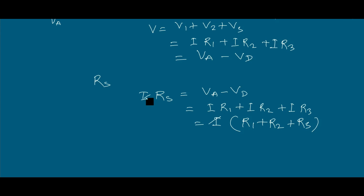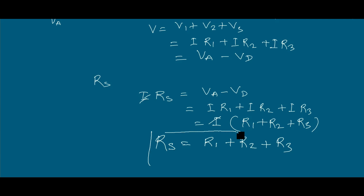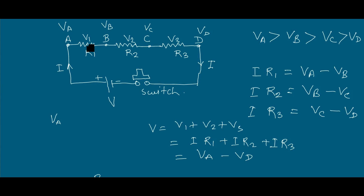Since I cancels from both sides, RS becomes equal to R1 + R2 + R3. This is the equation for the series equivalent resistance RS. There are certain key points to note: in a series combination, the current flowing through each component of the circuit is the same, and the potential drop across each resistor will be different.